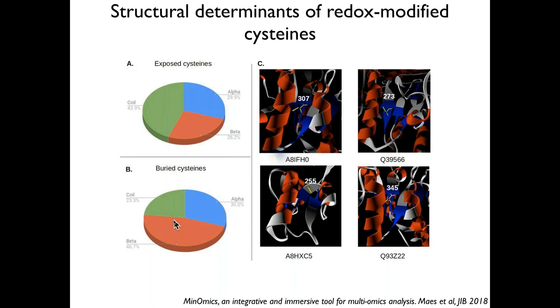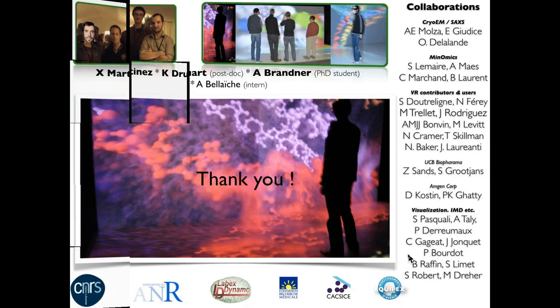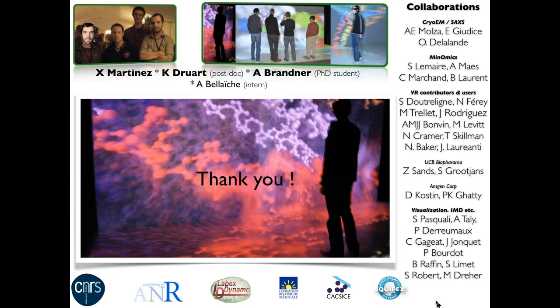Afterwards, you can check whether that hypothesis would be true. By looking at the statistics, if you compare exposed cysteines to buried cysteines, you can see that there's indeed a much higher propensity of beta sheets in the buried cysteines, which seems to verify that observation. Now how do we link this to VR? As I mentioned, this database and data mining tool is web-based. So we added a WebVR feature to UnityMOL — on the web page, you have an icon, and if you click on it, it would open any scene in a compatible WebVR device such as a head-mounted display. And with that, I would like to thank you very much for your attention, and also thank all the collaborators, contributors, and funding agencies. I'm happy to take questions.